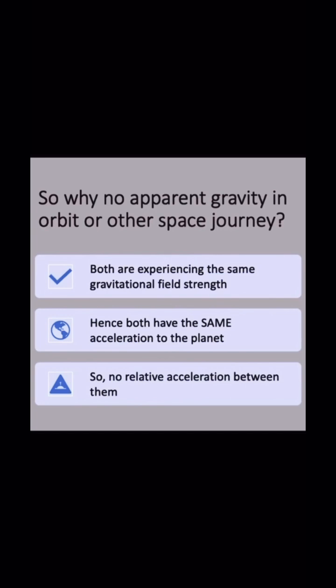So why is there no apparent gravity in orbit? Both experiencing the same gravitational field strength, both have the same acceleration to the planet or whatever is attracting them, so no relative acceleration between them.